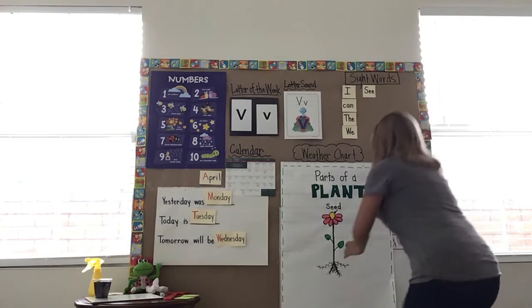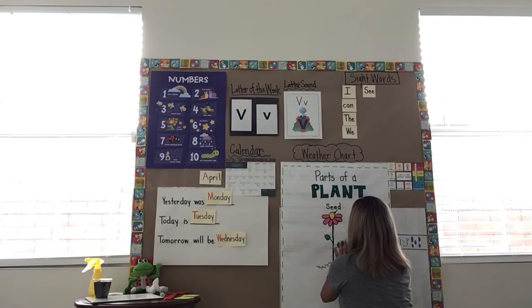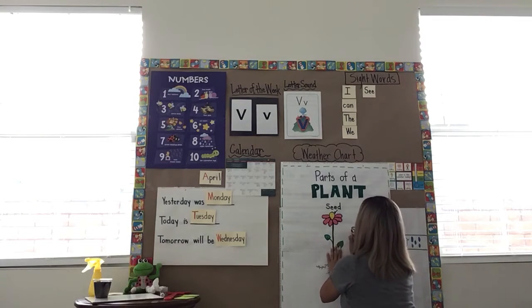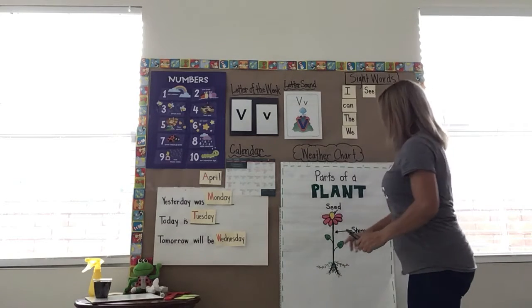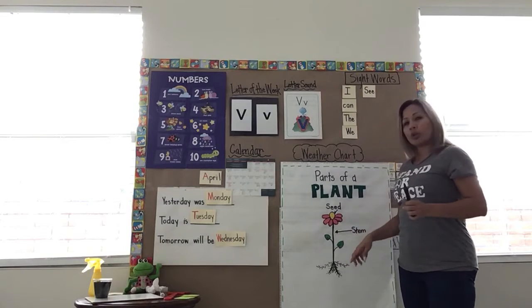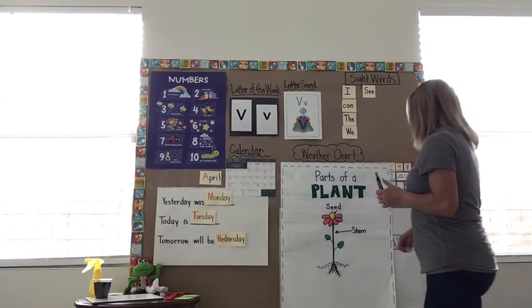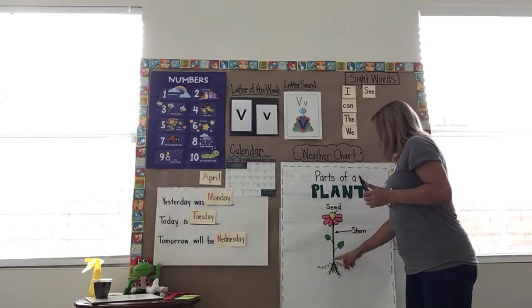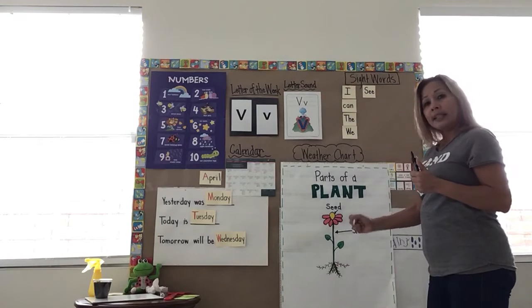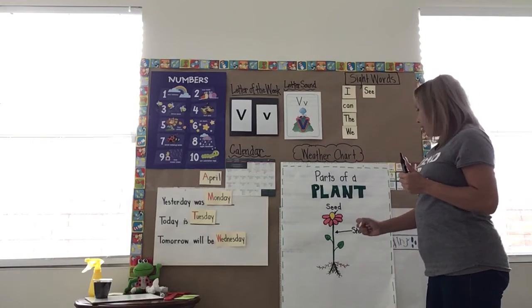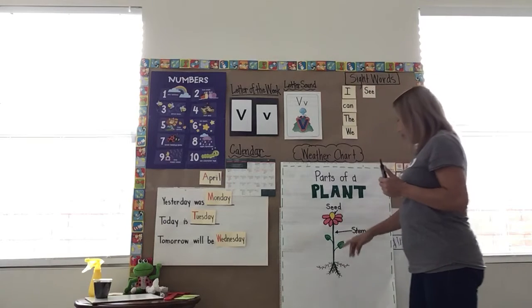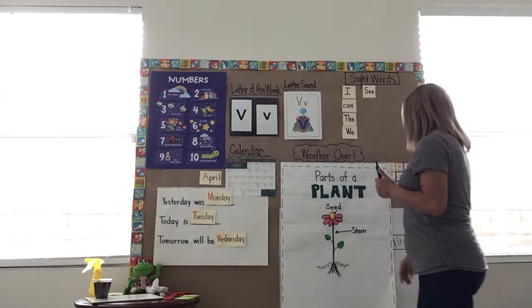Then it's the stem. The stem is what pops out of the ground. It holds the plant up straight. And it's kind of like a straw — it brings the nutrients and the water that the roots get, up through the stem to the flower. So the stem is very important. It holds the plant in the ground, makes it stand up straight, and brings the nutrients and water to the flower.